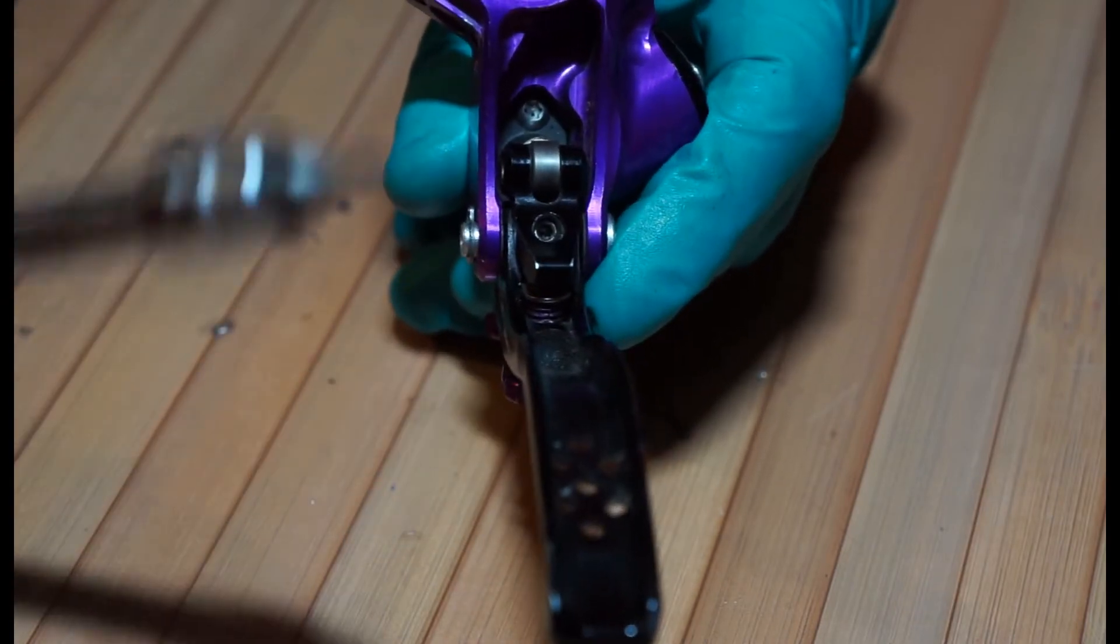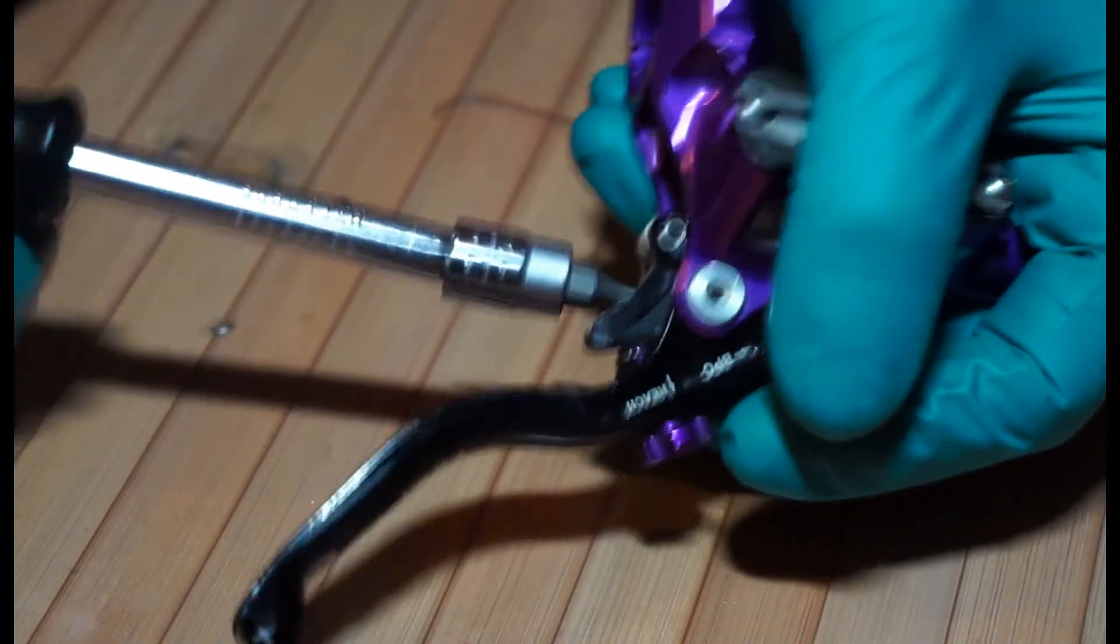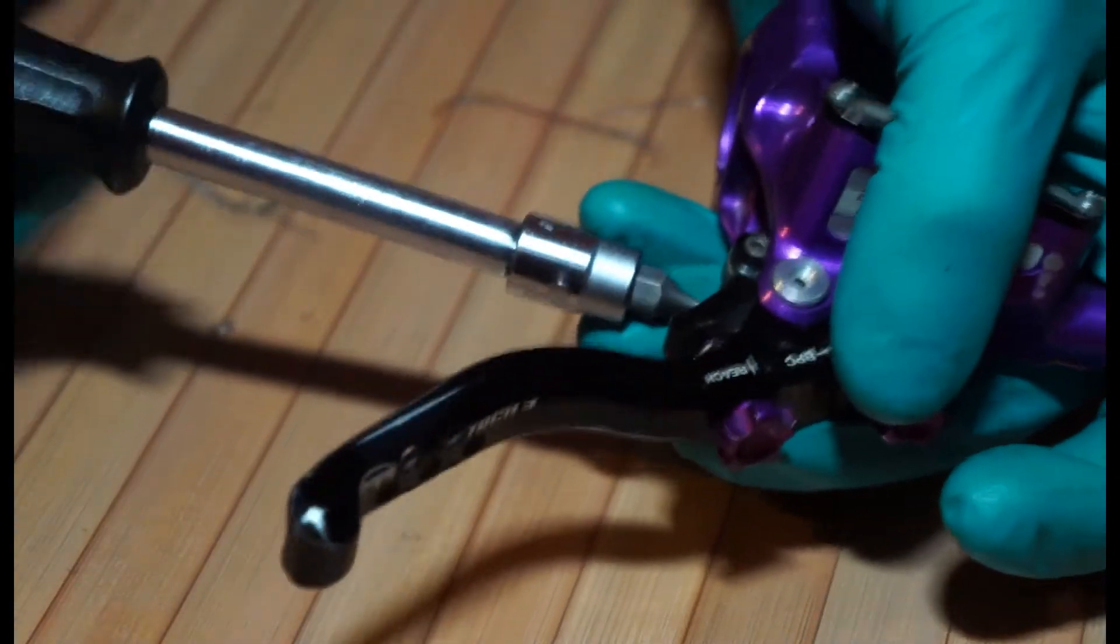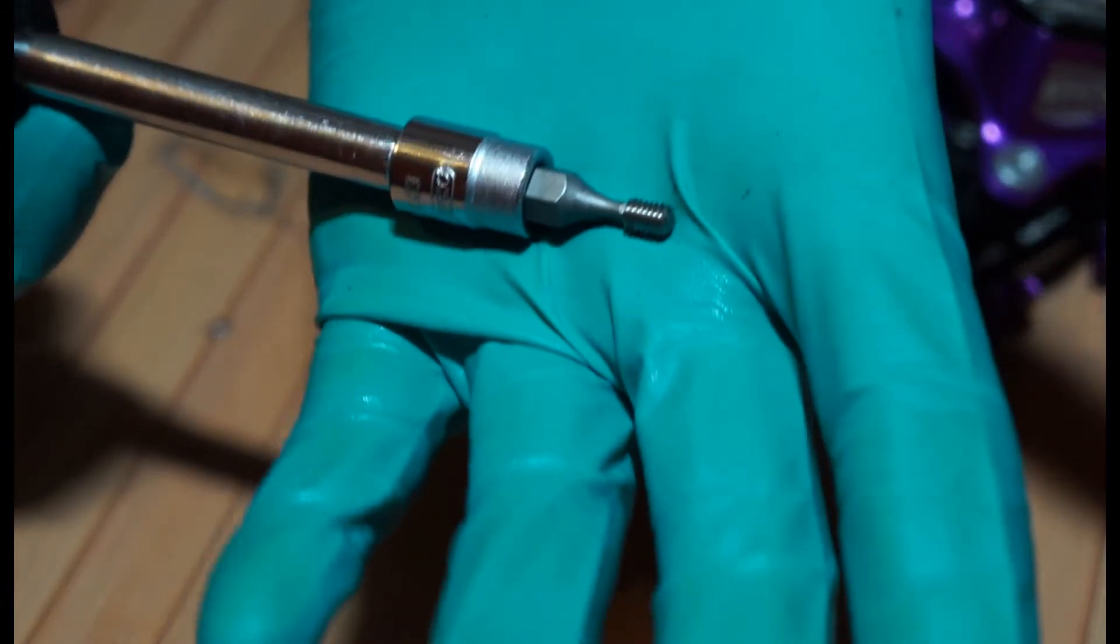First things first is there is a little 2mm grub screw in there. I'm going to grab an allen key, 2mm allen key, I'm going to unscrew that anti-clockwise. And then there's your little grub screw there.